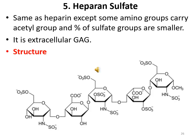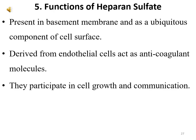Heparin sulfate is the same as heparin except some amino groups carry acetyl groups and the percentage of sulfate groups is smaller. It is an extracellular glycosaminoglycan with a structure similar to heparin. Functions of heparin sulfate: it is present in the basement membrane and as a ubiquitous component of cell surfaces derived from endothelial cells, acting as anticoagulant molecules. Heparin sulfate proteoglycans participate in cell growth and communication.